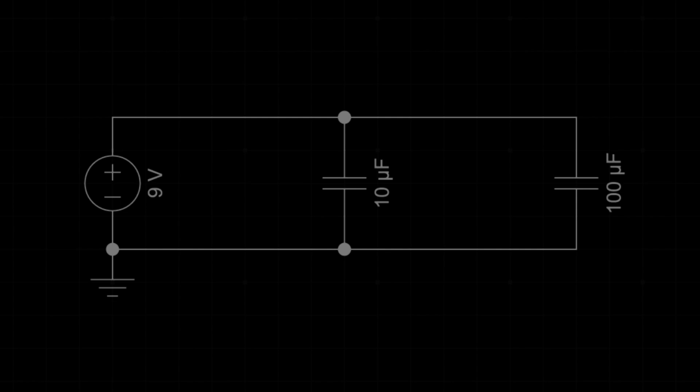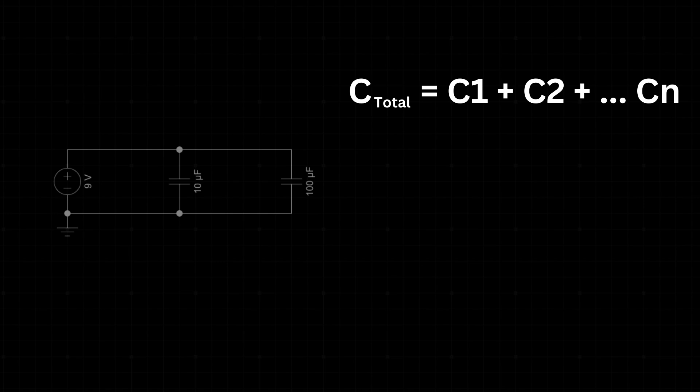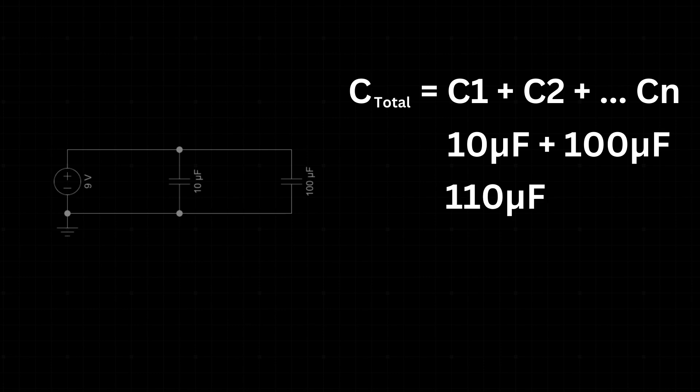In a parallel configuration, the equivalent capacitance is simply the sum of all the individual capacitances. The total capacitance formula in a parallel configuration is C total equals C1 plus C2 and so on. In our example, we add 10 microfarads and 100 microfarads, giving us a total of 110 microfarads.